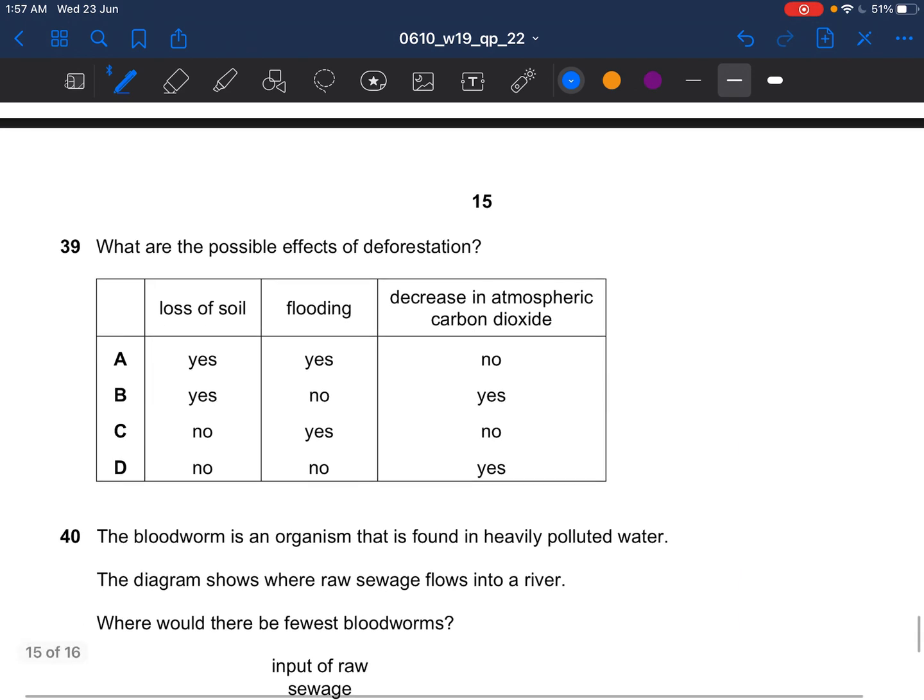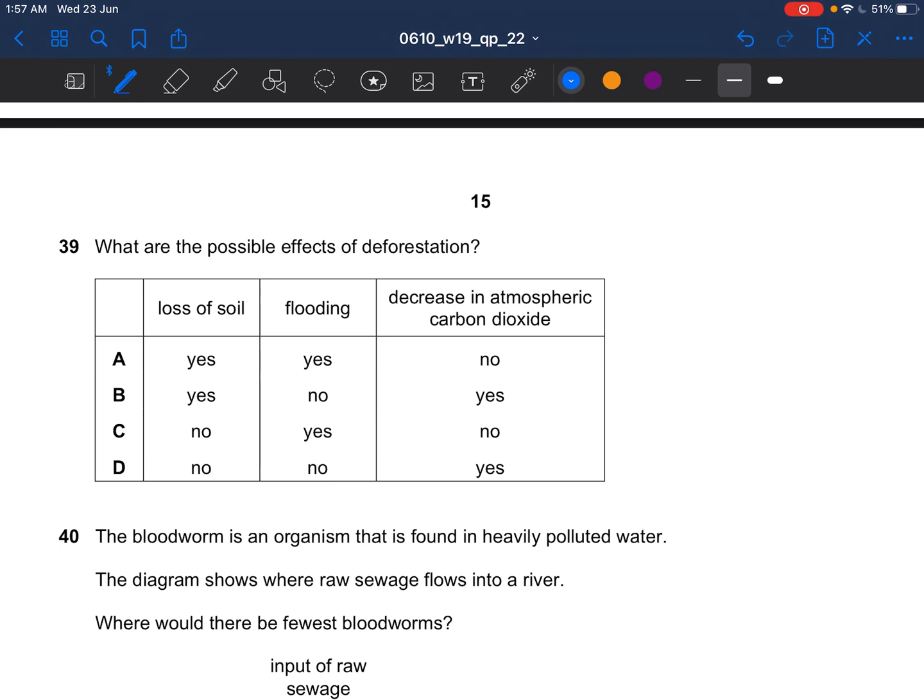Next question, what are the possible effects of deforestation? Deforestation is an example of habitat destruction. It can be like extinction, loss of soil, flooding, increase of carbon dioxide in the atmosphere. So yes, deforestation effects: loss of soil, flooding. So it's yes, yes, no. So the answer for question 39 would be A.